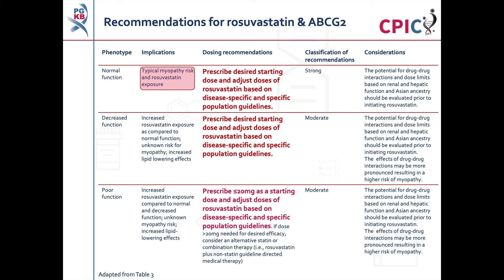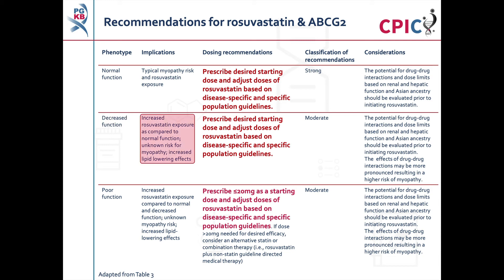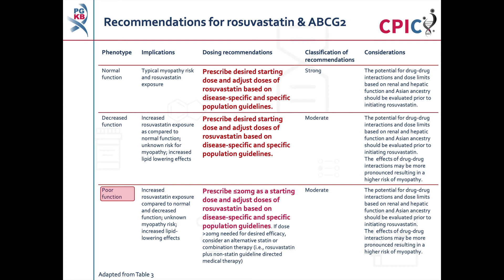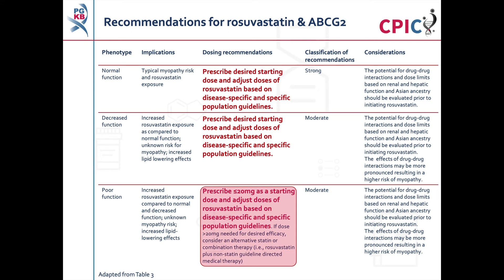These are the CPIC recommendations for rosuvastatin by ABCG2 phenotype. Patients with normal ABCG2 function have normal exposure to rosuvastatin and can be given the desired starting dose — this is a strong recommendation. Patients with decreased ABCG2 function may have increased exposure to rosuvastatin but can also be given the desired starting dose — this is a moderate recommendation. Patients with poor ABCG2 function may have increased exposure to rosuvastatin and should be prescribed a starting dose of no more than 20mg — this is also a moderate recommendation.